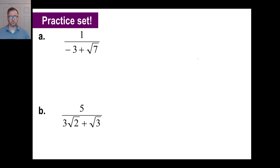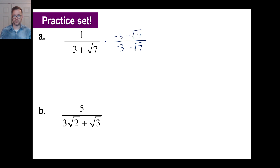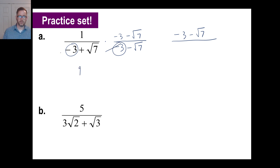Let's try the practice problems — there are just two of them. Try A and pause there. Here is our conjugate. Don't put a positive 3 and change both signs — only change this middle sign to a negative. So this will be negative 3 minus √7, and of course same thing here: negative 3 minus √7. Now let's work on this: negative 3 times negative 3 is 9. Positive times a negative is negative, and this will be just 7. So 9 minus 7 equals 2. And that is it.